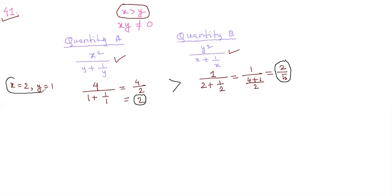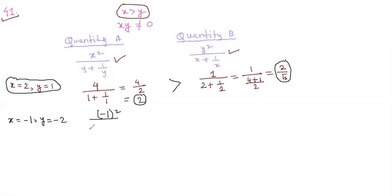We used positive values for both x and y. Now let's try both negative. Let x equals minus 1 and y equals minus 2 — we know minus 1 is greater than minus 2. Putting into quantity A: x squared gives 1, and y plus 1 over y is minus 2 plus 1 over minus 2. Making a common denominator: minus 2 times minus 2 is 4, plus 1 gives 5 over minus 2, so we get minus 2 over 5, i.e., quantity A equals minus 2 over 5.